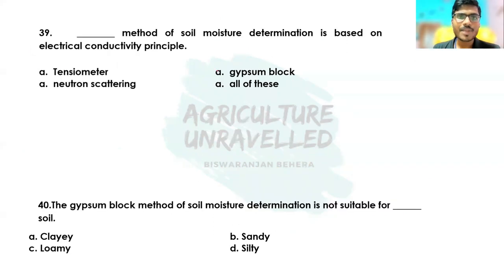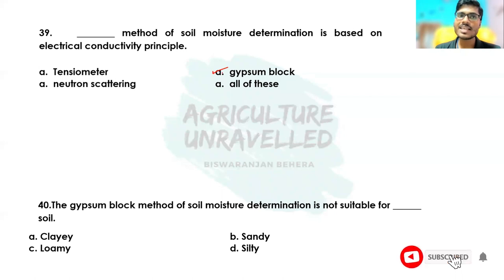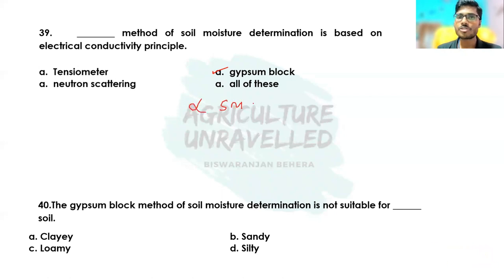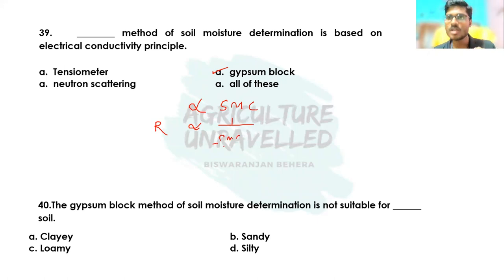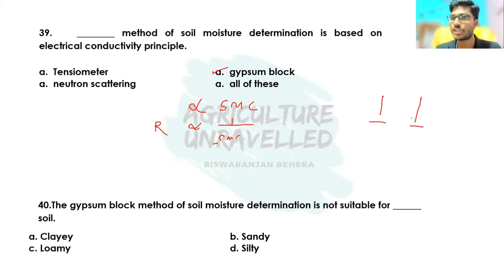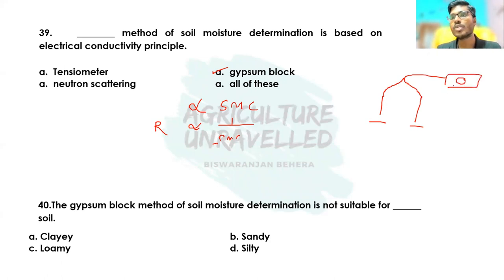Coming to the next question: tensiometer reading should be taken in early morning, midday, evening, or night? The correct answer is tensiometer reading should be taken during early morning, because tensiometer reading is generally affected by temperature. Then: which method of soil moisture determination is based on the electrical conductivity principle? The correct answer is the gypsum block method. The electrical conductivity principle states that conductivity of electricity is directly proportional to soil moisture content, while electrical resistance is inversely proportional to soil moisture content.